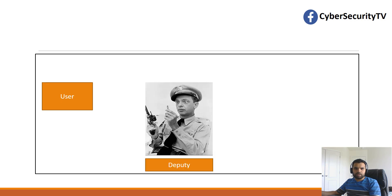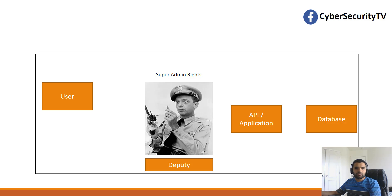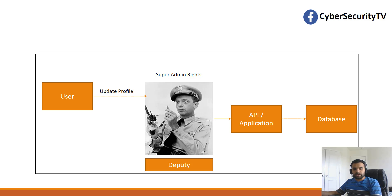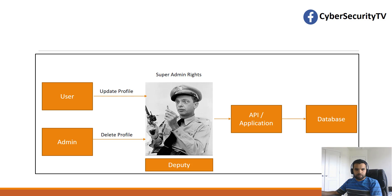So we have one user, a Deputy — which is a program or middleware that has super admin rights — then we have the application API or server, and then the database. Assume the user makes an update profile request. The Deputy has all the rights, evaluates the request, sends it to the application to update the profile — say, changing the first name. The application calls the database, updates the records, and returns a 200 OK response. This is a legitimate scenario. Similarly, an admin calling delete profile goes through Deputy to application to database — that's fine too.